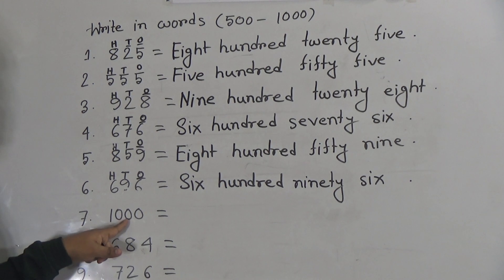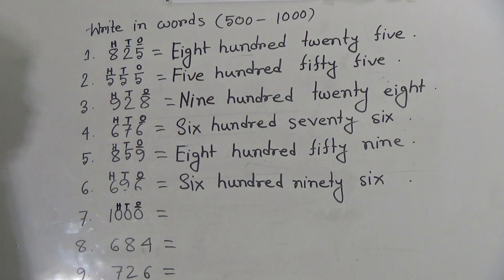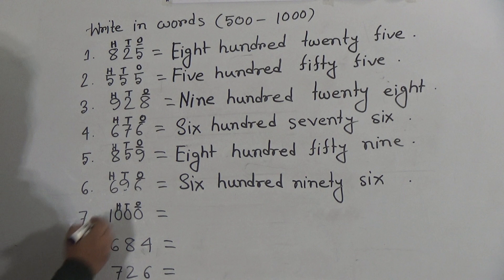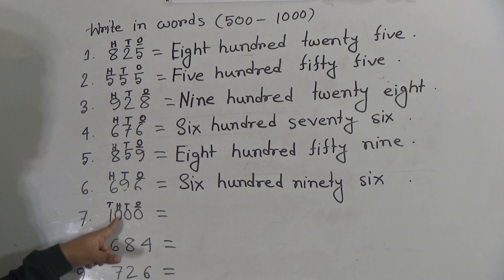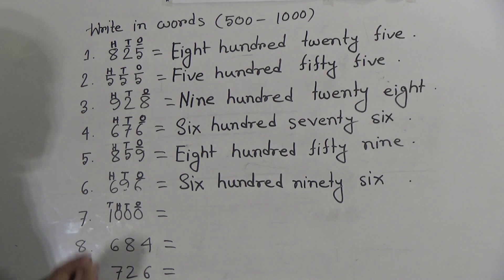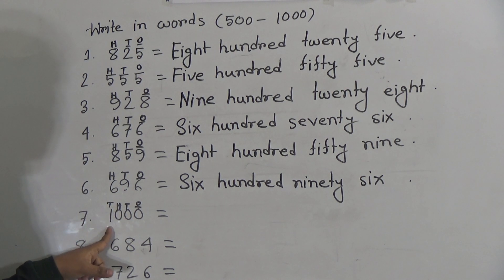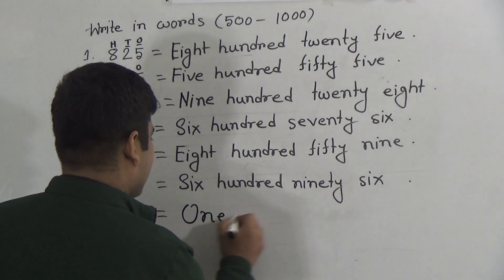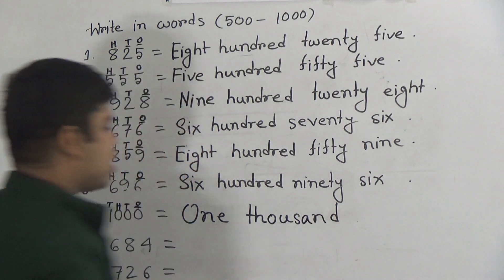Next, number 7: 1, 0, 0, 0. Here 0 is in the 1's place, 0 is in the 10's place, and 0 is in the 100's place. My students noticed — there is a new place that has come, which is called the 1000's place. Since 1's place, 10's place, and 100's place are all 0, we only write the 1000's place. 1 is in the 1000's place, so we read this number as 1000. Write: O-N-E T-H-O-U-S-A-N-D. One thousand.